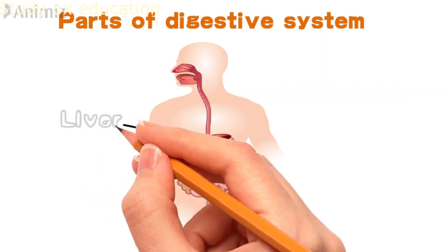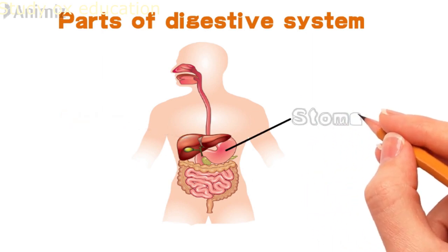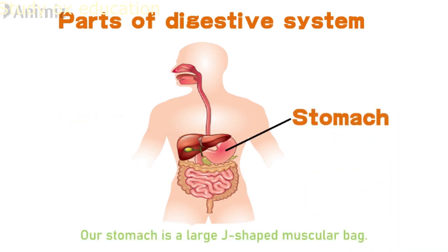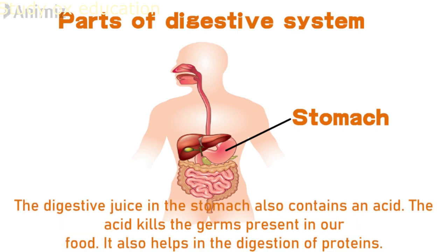The stomach is a large J-shaped muscular bag. It mixes the food with digestive juice. The digestive juice brings about the digestion of proteins. The digestive juice in the stomach also contains nutrients and acid. The acid kills the germs present in our food and also helps in the digestion of proteins.